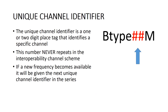The unique channel identifier is a one or two digit tag that identifies the specific channel. This number never repeats in the interoperability channel scheme. If a new frequency becomes available, it will be given the next unique channel identifier in the series.